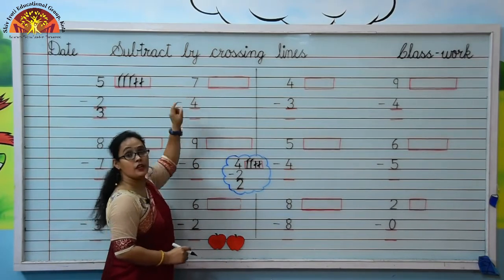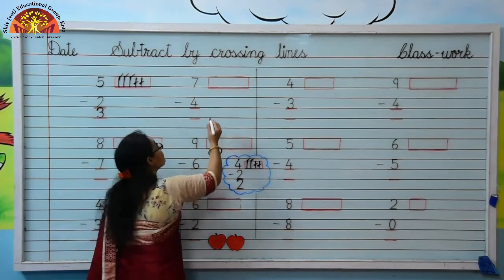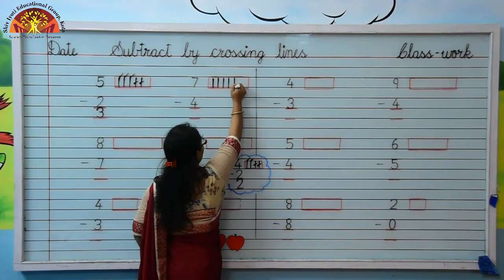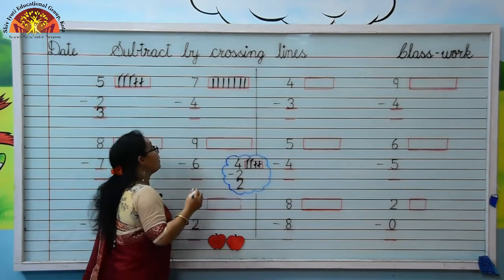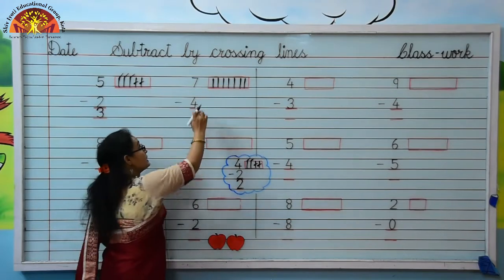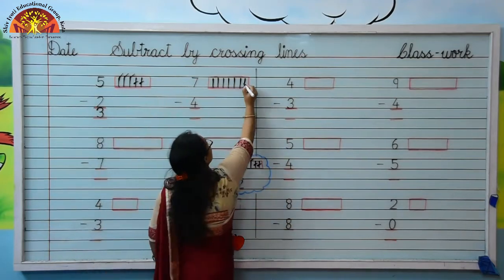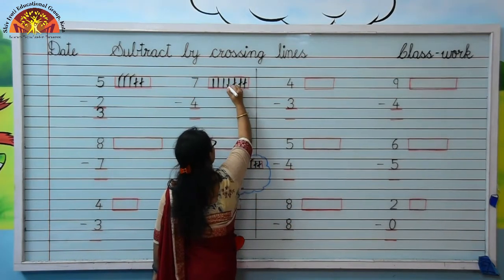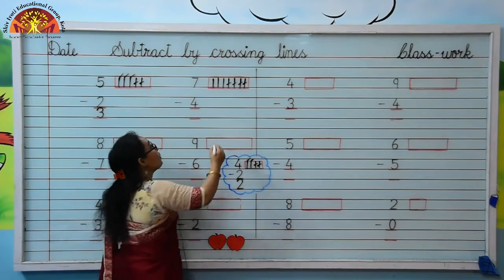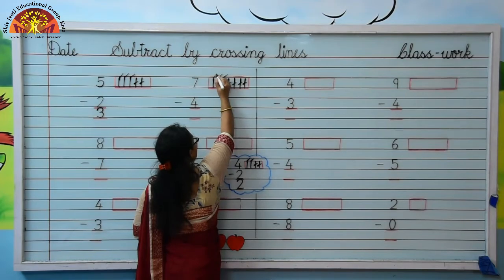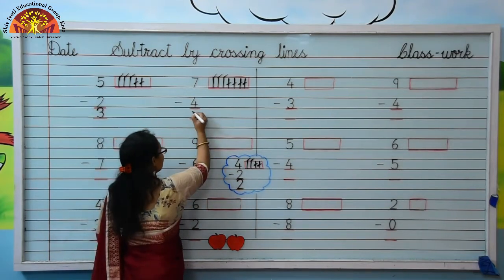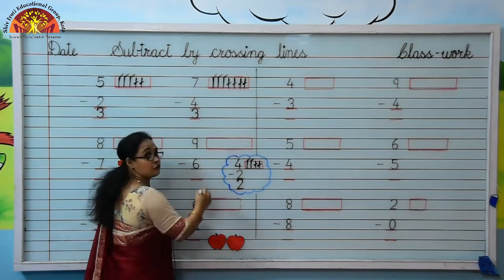Next number is 7. Kids, let's draw 7 lines: 1, 2, 3, 4, 5, 6, 7. The downside number is 4. Kids, we will cross 4 lines from 7 lines. Let's cross them: 1, 2, 3, 4. Now you tell me how many lines are left. Let's count: 1, 2, 3. Yes, 3 lines are left here. Your answer is 3. Write here 3 like this. Move to next.